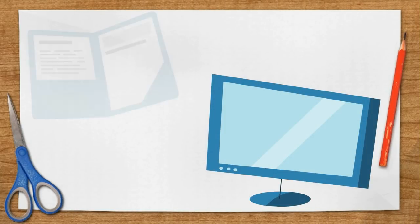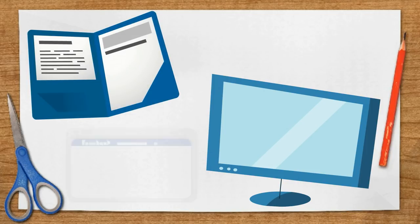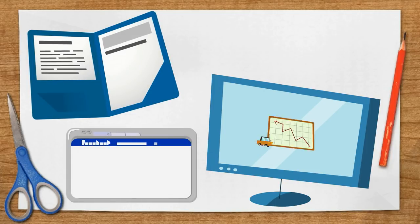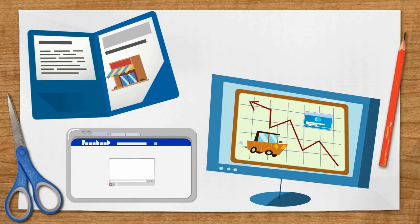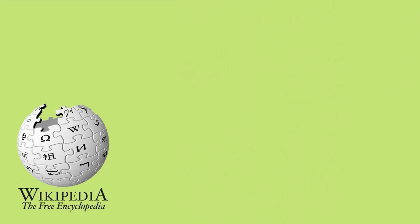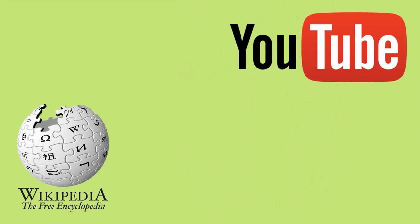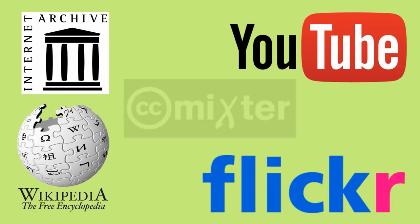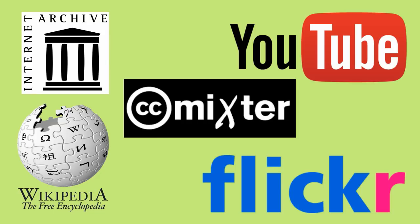Students can use Creative Commons licensed works to help them create presentations, reports, videos, and audio. There are many sites on the web that have works licensed under Creative Commons, like Wikipedia, YouTube, Flickr, the Internet Archive, and CC Mixter.